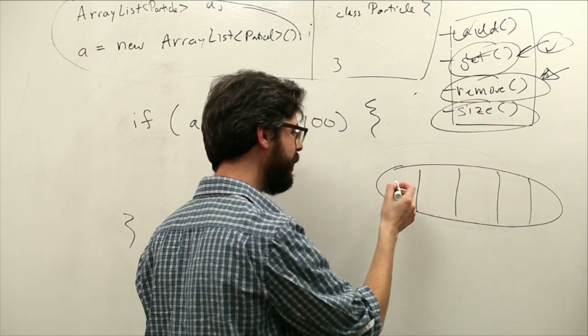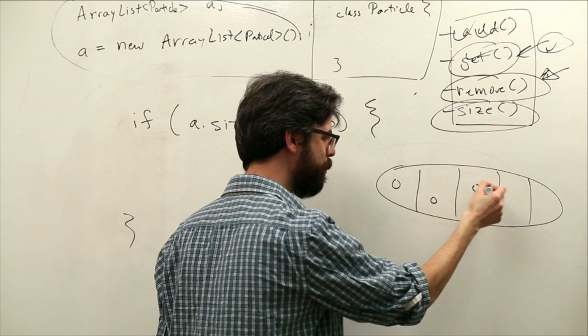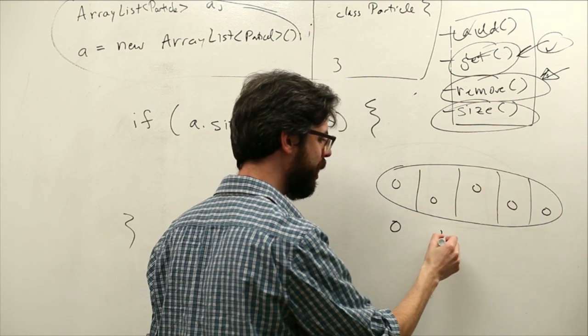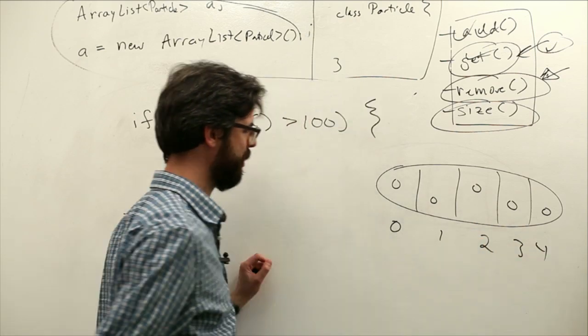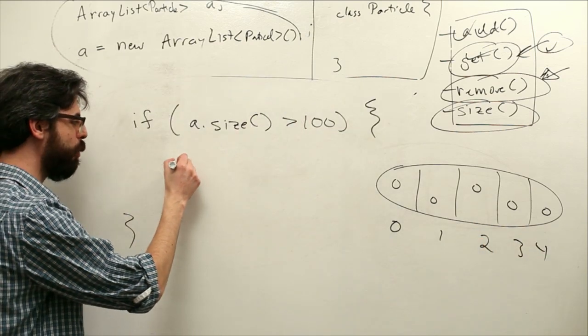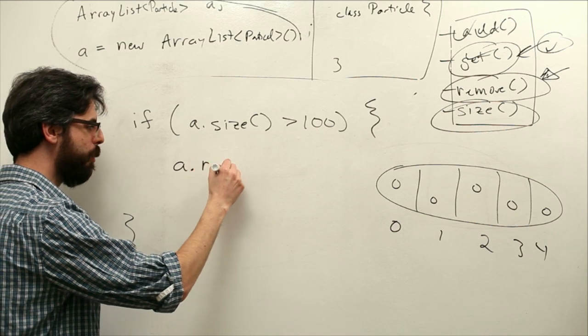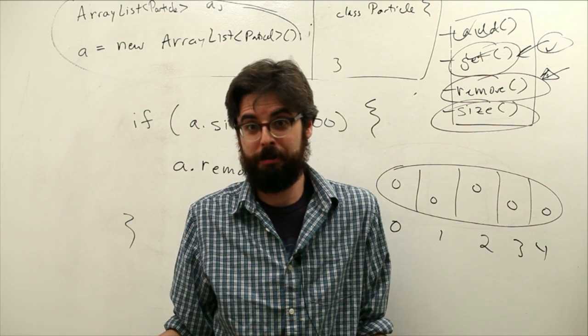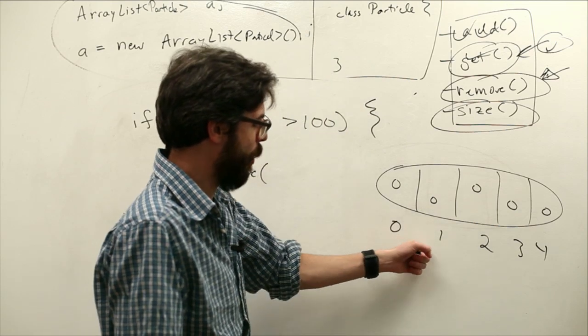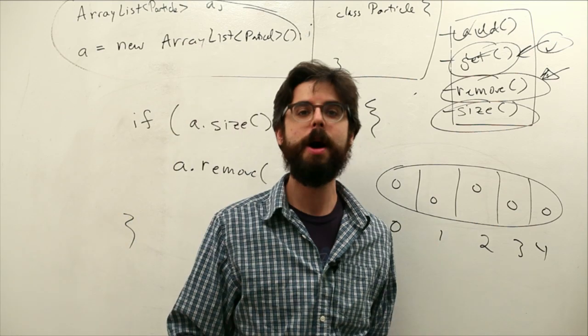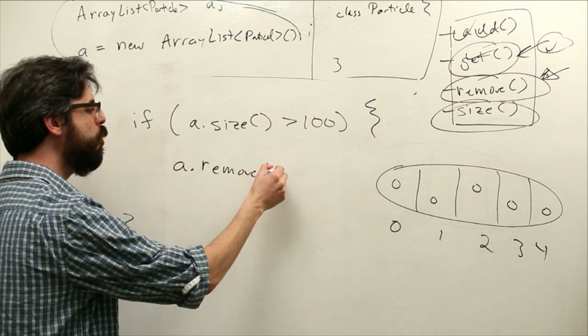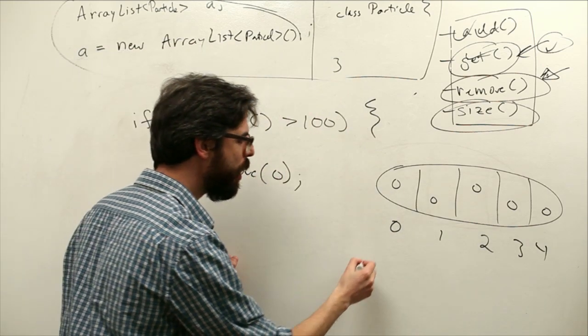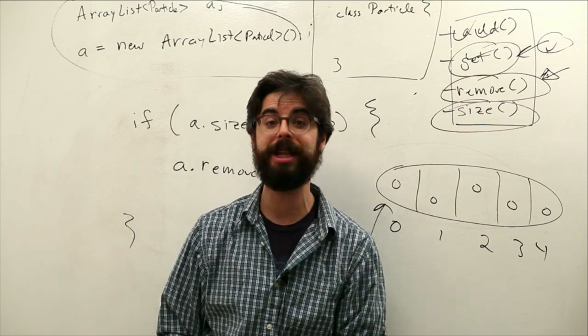The remove function deletes elements from that list. What do we have to tell it? We have to tell it which one. Elements in an ArrayList are indexed just like in a regular array. If I say to remove one, a.remove, now which one should I remove? I could say let's remove 0 or 1 or 2.